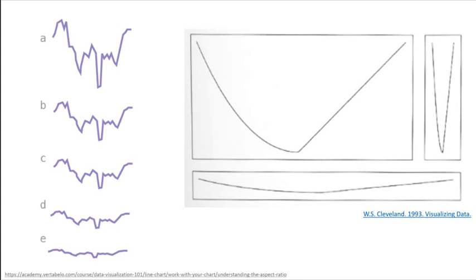There aren't specific rules for choosing an aspect ratio — kind of. There is a rule that if you're showing the same variable on both axes, like sometimes with temperature, then you have to space both the x and y axis exactly the same — it needs to be a square. It depends on the nature of your data and the goals of your graphic, and most importantly you need to be aware of the effects of aspect ratio. William Cleveland devised a rule called banking to 45 degrees: using an aspect ratio that gives the slopes of lines an average angle of 45 degrees, because most people can estimate that angle with accuracy.